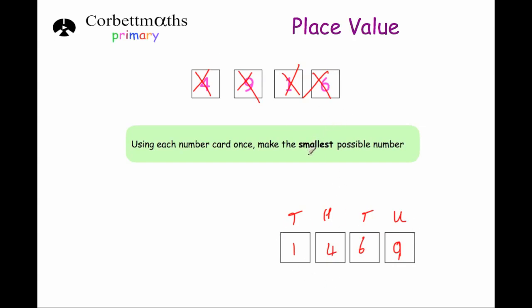If we were asked to make the biggest possible number, we would have done 9, 6, 4, 1 — putting the biggest numbers to the left and the smallest ones to the right.